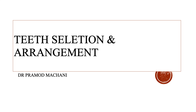Welcome to your prosthodontic lecture. Today we speak about teeth selection and teeth arrangement. After you have done your vertical jaw relation, you take the occlusal rims, articulate them on an articulator, and start doing your teeth arrangement. Before that, you have to select the size, shape, form, and shade of the teeth. This lecture will cover the factors and criteria for teeth selection and arrangement.